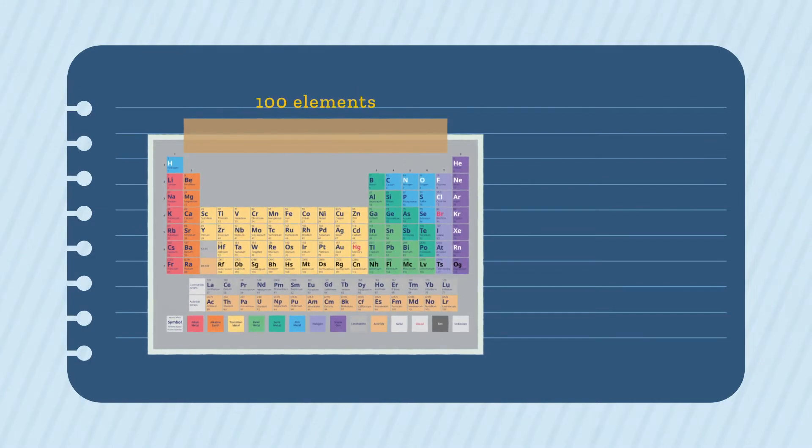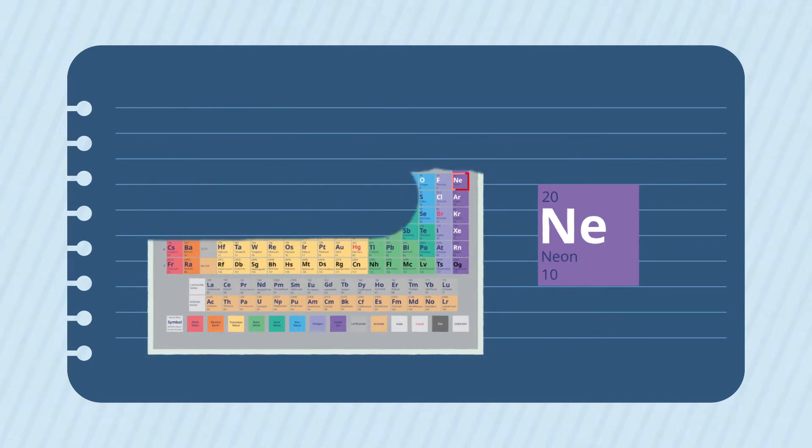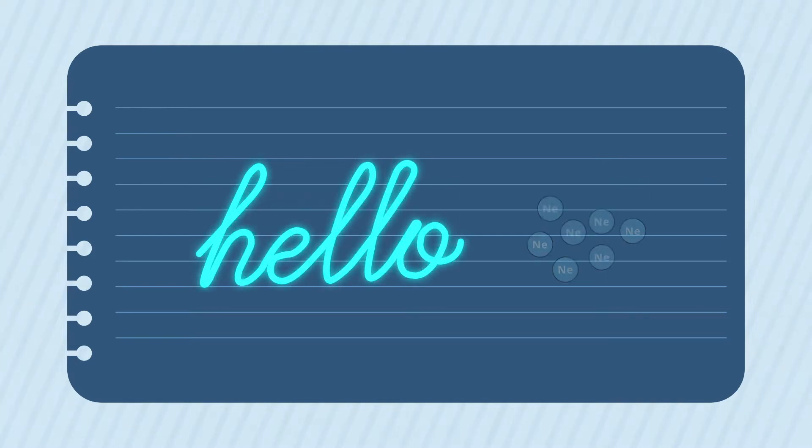Every known element is represented in the periodic table by a symbol. For example, the symbol Ne is used to represent the element neon. A sample of neon only contains neon atoms.